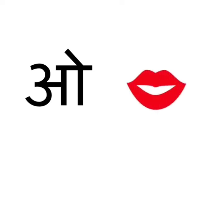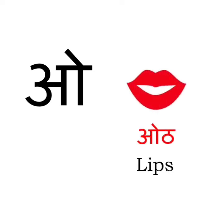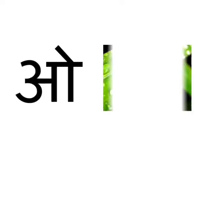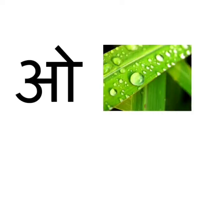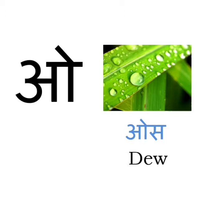O se os — oat. Oat means lips. Lips are a part of our face. O se os. Os means dew — drops of water that are seen on the leaves early in the morning.